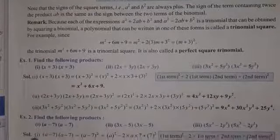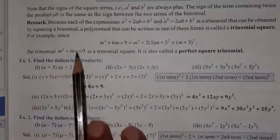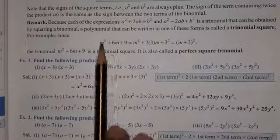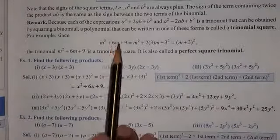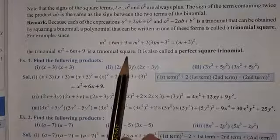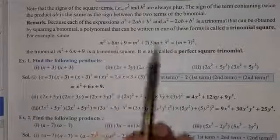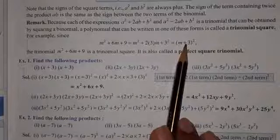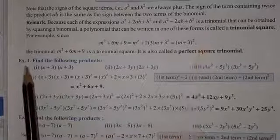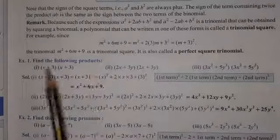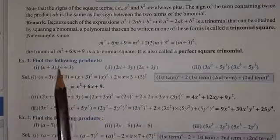अब इसमें एक बहुत अच्छी बात बताई गई है जो next chapter में काम आएगी — कि m square plus 6m plus 9 is a perfect square trinomial। यह एक trinomial square है, और अगर इसको हम convert कर सकते हैं वापस से उसी form में, यह आप next chapter factorization में पढ़ेंगे। Example 1 देखिए — find the following products। यहाँ same terms दिए गए हैं, तो इनको हम identity से solve कर सकते हैं।